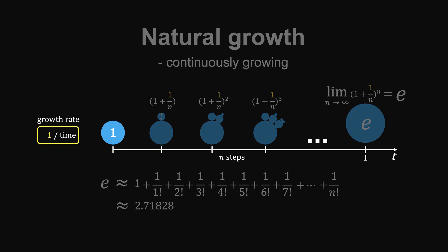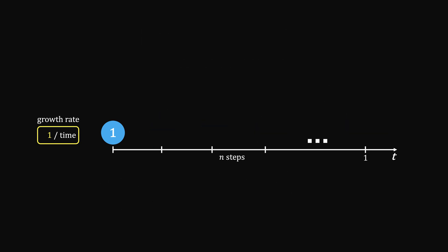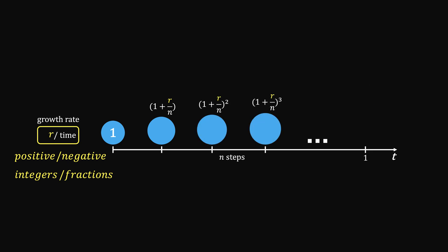In this video, we will see the general case, when the growth rate can be positive or negative, integers or fractions. Going through n steps, the outcome is in the form of nth power.